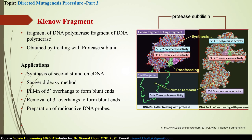The Klenow fragment has 5' to 3' polymerase activity and 3' to 5' exonuclease activity for proofreading. The small fragment has 5' to 3' exonuclease activity and lacks 5' to 3' polymerase activity. Klenow fragment is widely used to synthesize the second strand of complementary DNA. It is also used in DNA sequencing by the Sanger-dideoxy method. Due to its exonuclease activity, Klenow fragment can be used to produce blunt ends from sticky-end-containing DNA molecules, by filling in 5' overhangs or removing 3' overhangs to form blunt ends. It is also used in preparation of radioactive DNA probes.